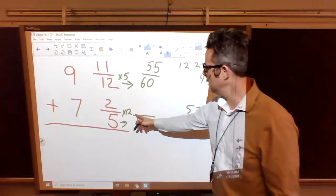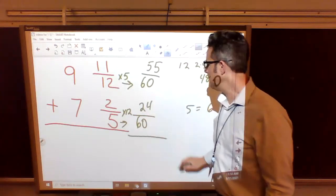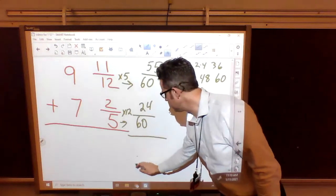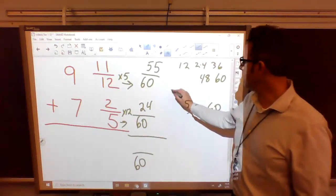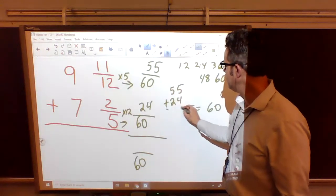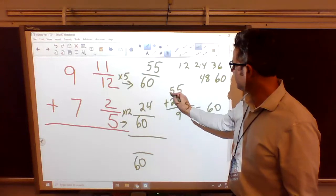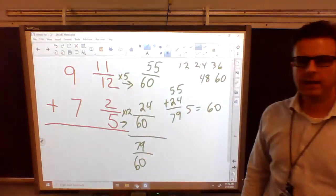What is 12 times 2? We've got to do the top number. 12 times 2 is 24. So now we have to add these. 60s plus 60s is still 60. 55 plus 24, if you don't know it, write it down. 55 plus 24. 5 plus 4 is 9. 5 plus 2 is 7. It's 79. 79 over 60.